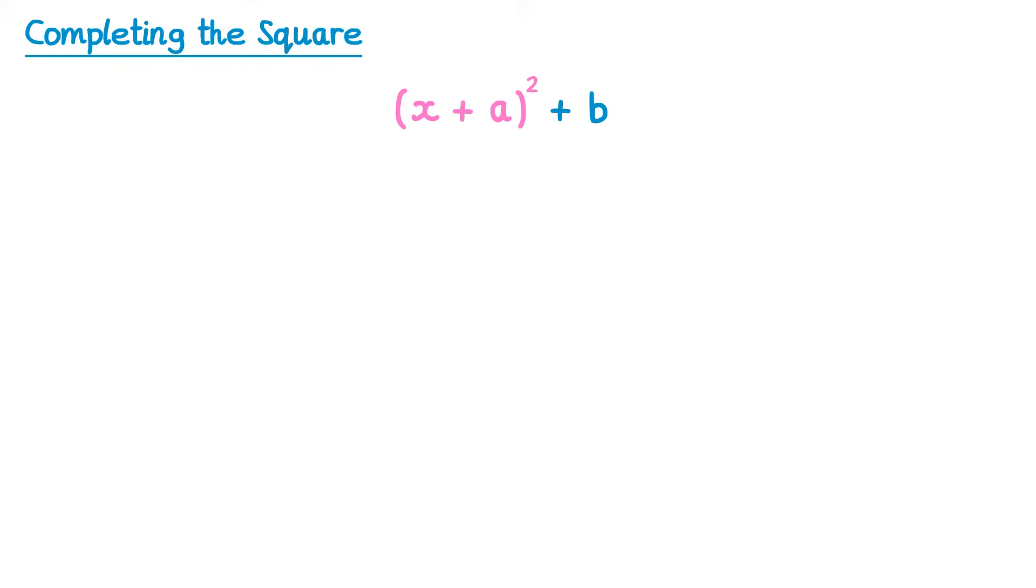Now we've seen things that look like this before, for example x plus 1 all squared. All this means is take x plus 1 and times it by itself. We would write that as x plus 1 times x plus 1.